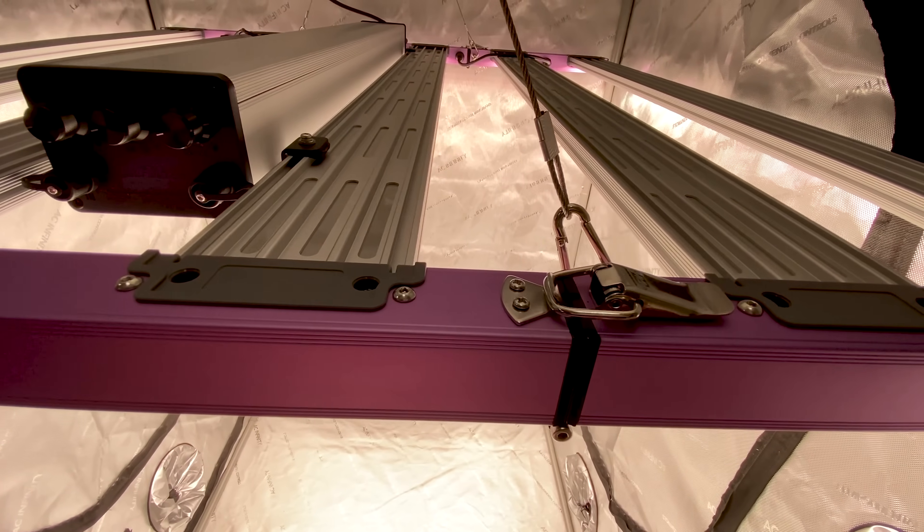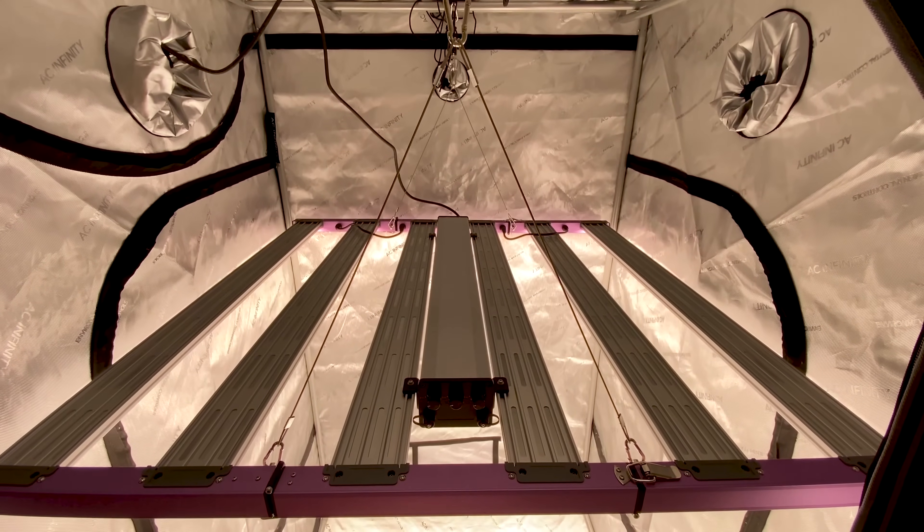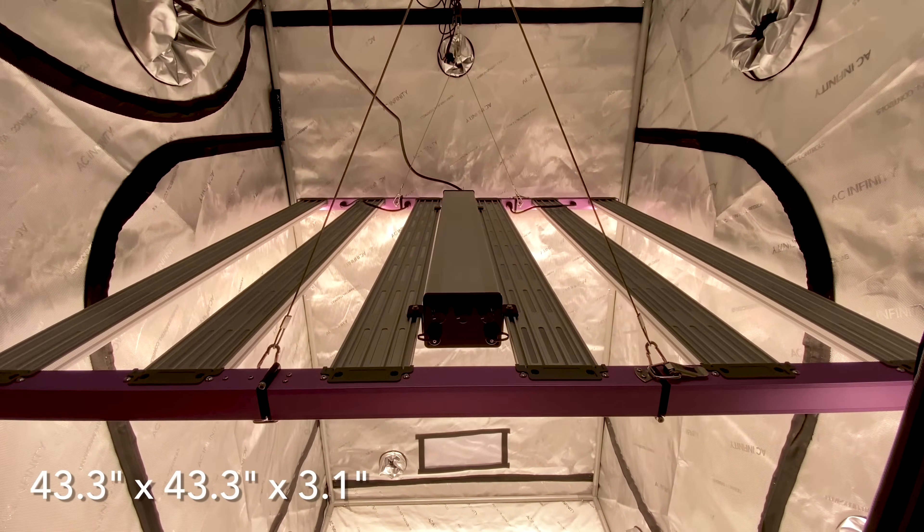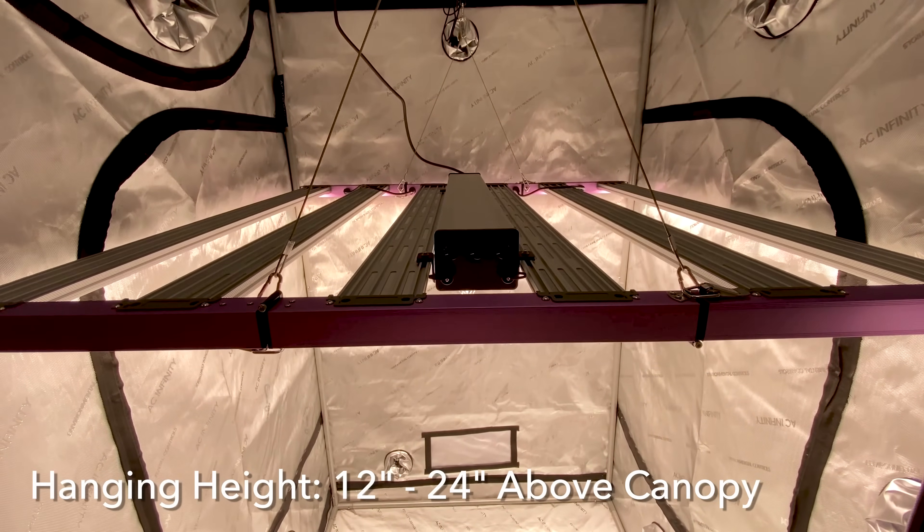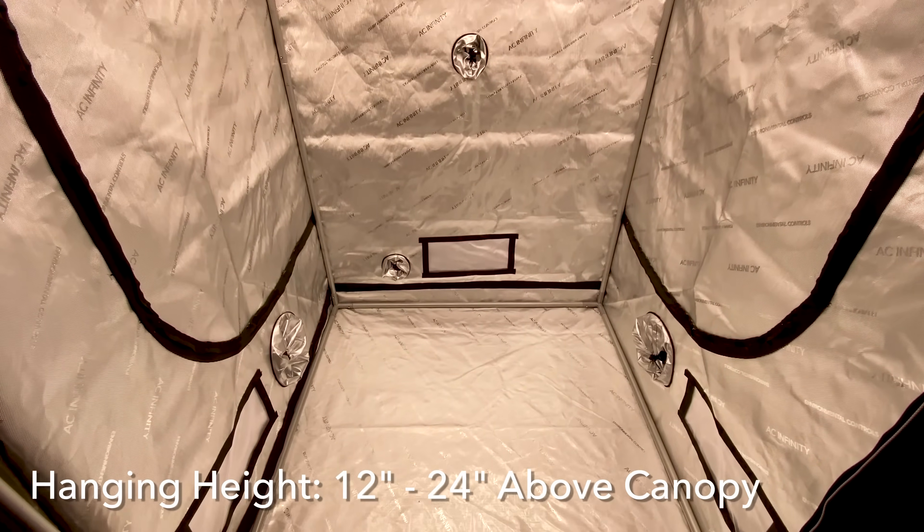Simply unfold the tri-fold fixture and lock the frame in place. Unfolded, the fixture's dimensions are 43.3 x 43.3 x 3.1 inches. The light should be hung 12 to 24 inches above the canopy depending on the coverage and intensity you desire.